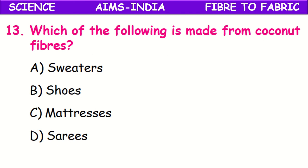Which of the following is made from coconut fiber? Coconut fiber is thick and rough. The options are sweater, shoe, mattresses, and saris. Mattresses can be made from coconut fiber. It is also called coir.